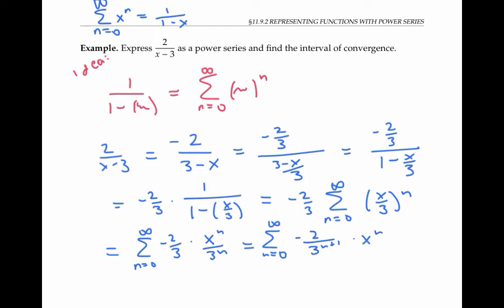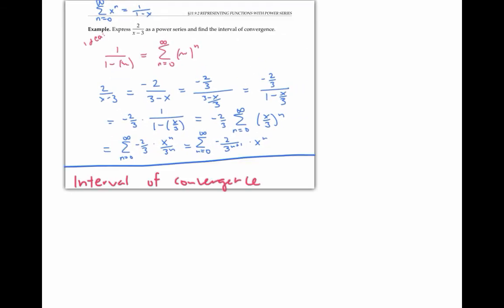To find the interval of convergence for this power series, there are two approaches. First, I could do a standard computation using the ratio test. Working out the details, you should get that the radius of convergence is three, and the interval of convergence is from negative three to three.